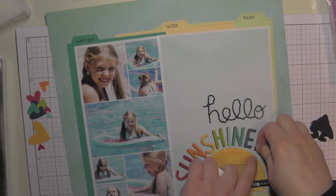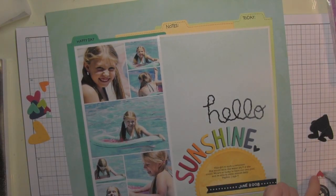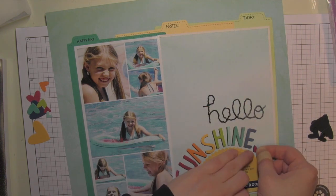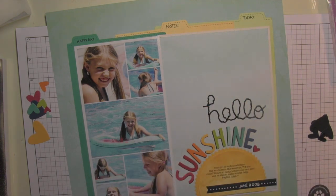I've got my journaling, I've got my title, I've got my photos, I've got the background built. Now comes the part where you can add embellishments.